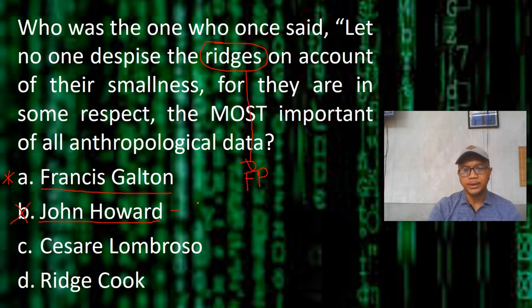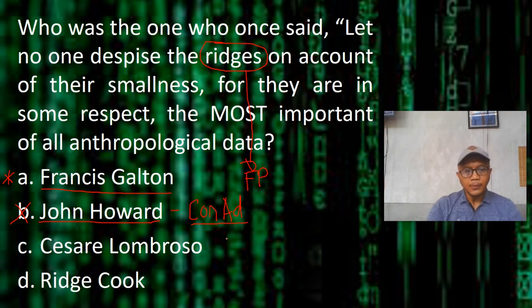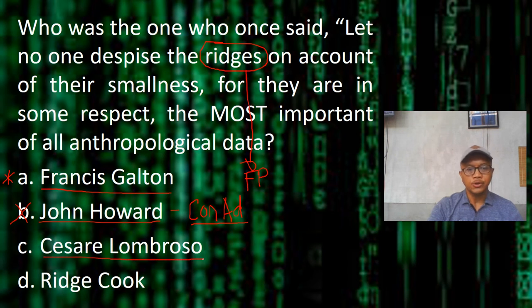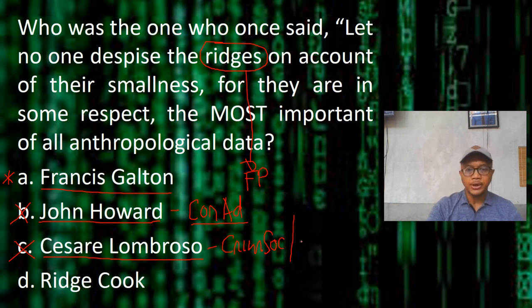John Howard can be found in correctional administration — more particularly, he is known as one of the prison reformers. Letter C — Cesar Lombroso. Do we encounter the name Cesar Lombroso in fingerprint? The answer is no. We encounter Lombroso in criminology. He is also encountered in polygraph, as Lombroso had a notable contribution related to polygraph examination.